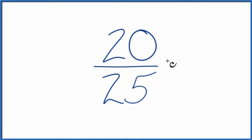To do that, we need to find a common factor, something that goes into 20 and 25. So here are the factors for 20 and 25.